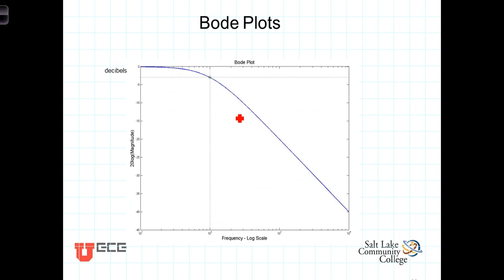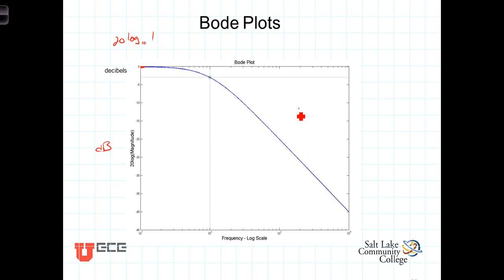Here we have the actual computer-drawn Bode plot. Here we are at the cutoff frequency of 100 radians per second — it's a low-pass filter. Along this side the units are decibels, and along this axis it is log base 10 of the frequency. Here we are at H_max. In dB, the maximum value H_max was 1, so 20 log₁₀(1) = 0 dB. At the cutoff frequency, it has dropped down 3 dB from its maximum value. As the frequency continues to increase, it becomes more and more like a straight line sloping down with a slope of −20 dB per decade.